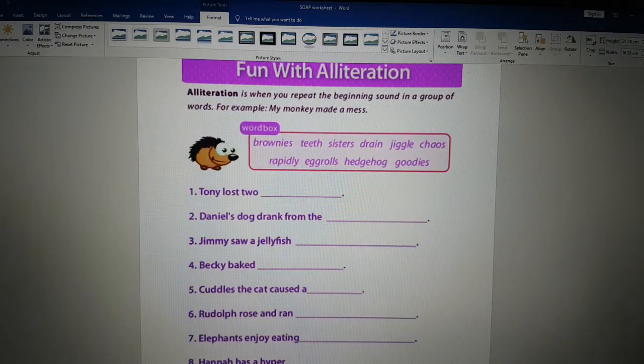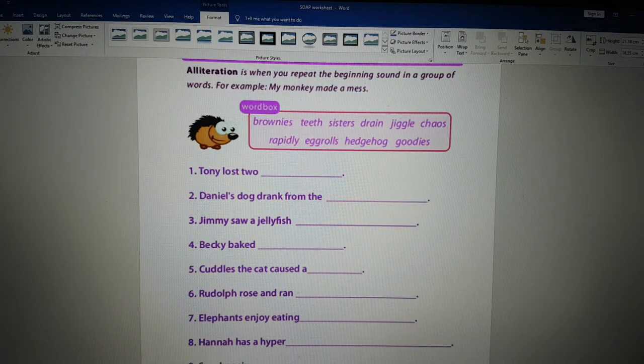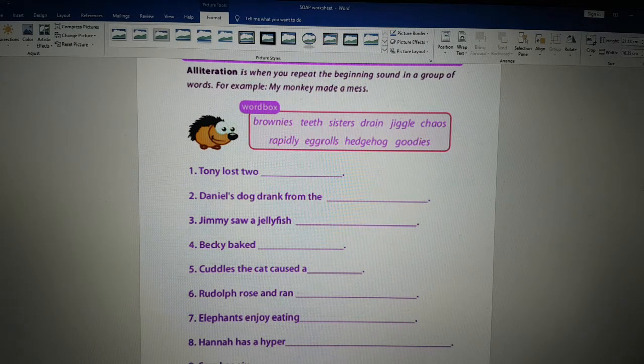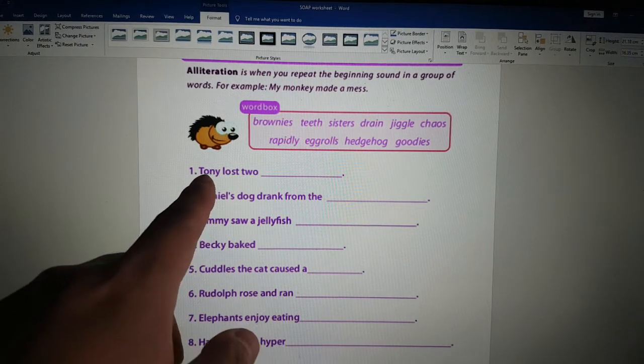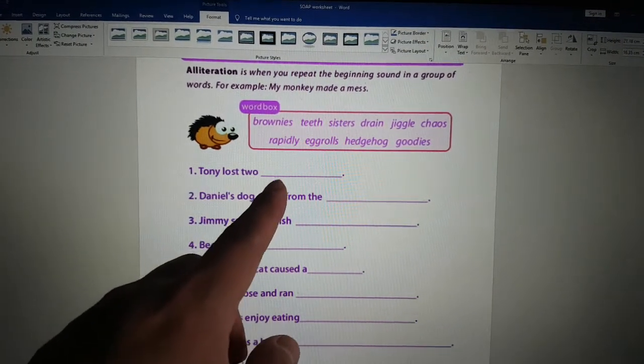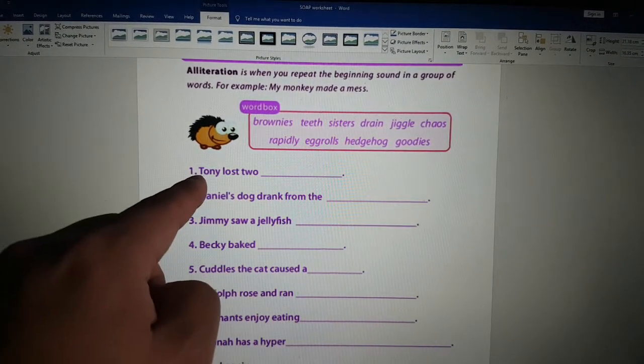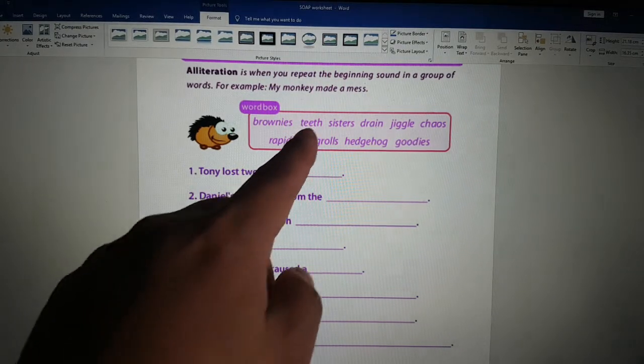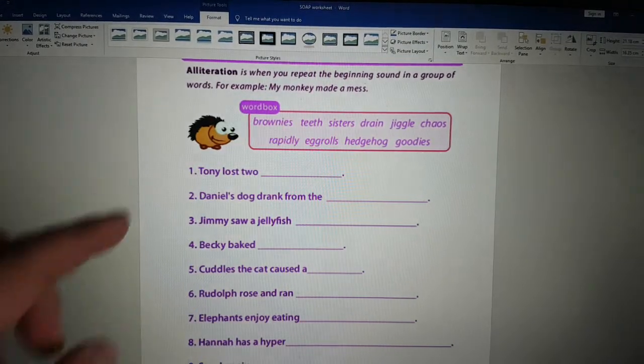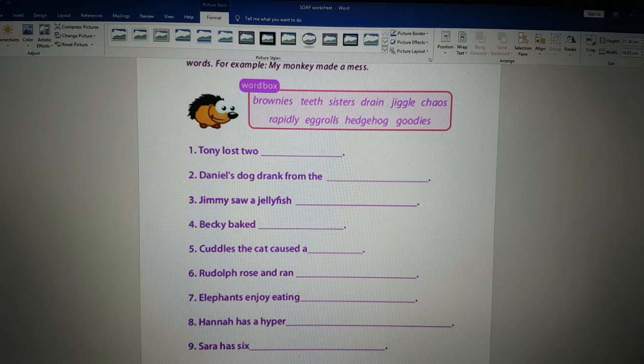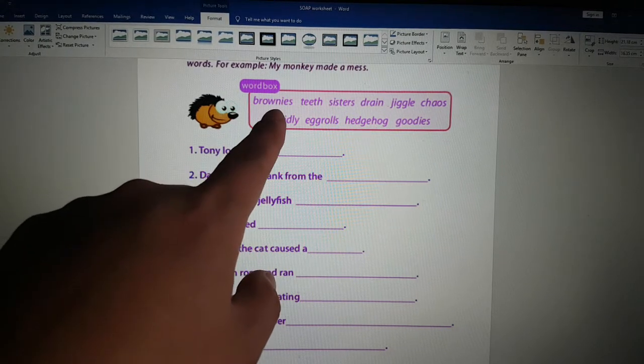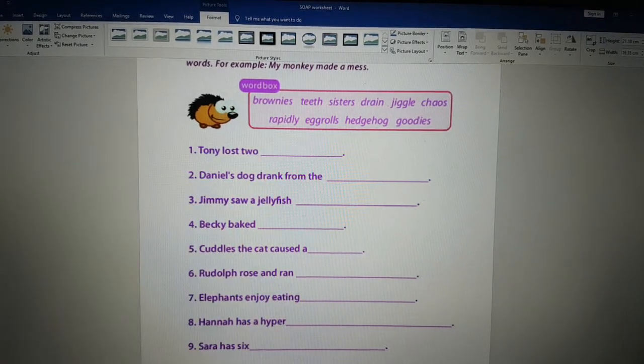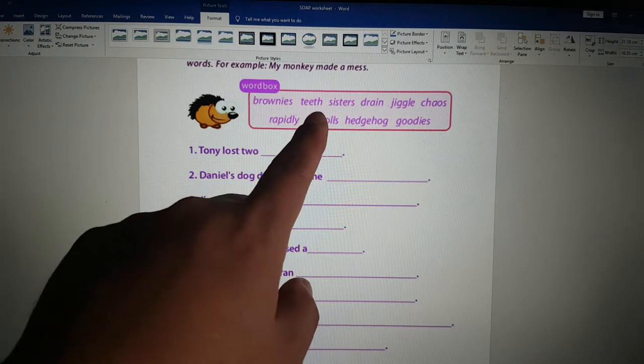Alliteration. Alliteration is where words have the same sound. For example, if we look at the example here, number one: Tony lost two ta-ta-ta. We want a word with ta. Tony lost two teeth. So that is what alliteration is. Let's look at the words. We have brownies, chocolate brownies, teeth, sisters, drain.